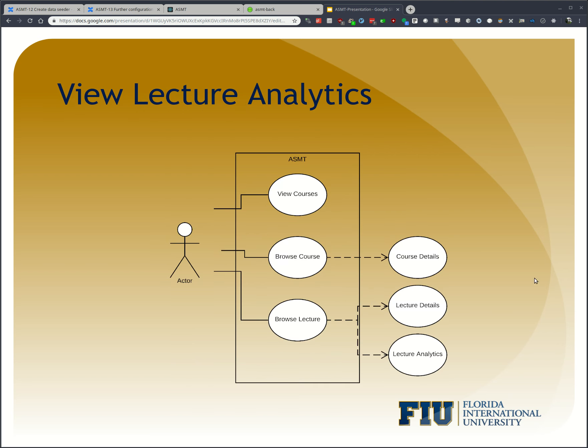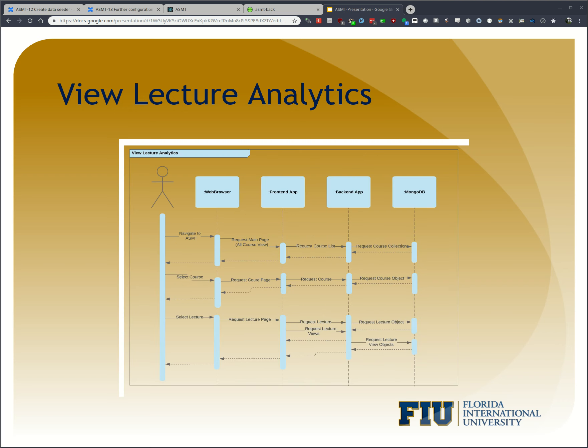Let's move on to viewing lecture analytics. As you can see here in the total system composition, the actor is able to browse courses, which includes the course details, and browse lectures, which includes the lecture details and the lecture analytics. In this sequence diagram, all portions of the application are at play — the front-end, back-end, and MongoDB. The user requests the main page, clicks on a course, sees the lectures available, and requests a lecture. The lecture page is the end goal, to see the information at the lecture level as well as the per-student information.